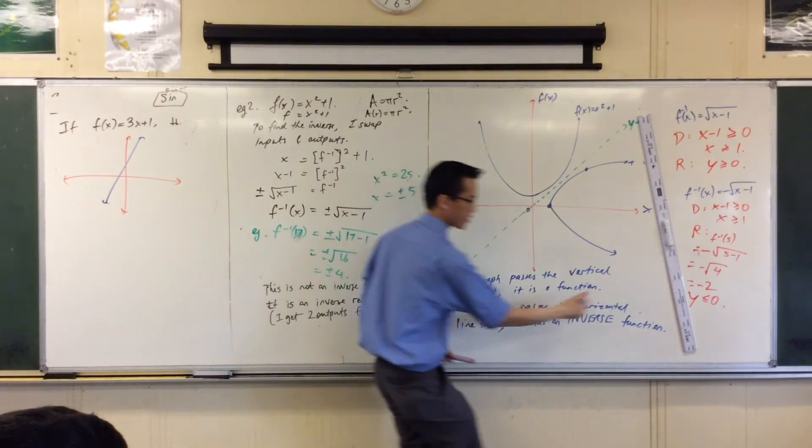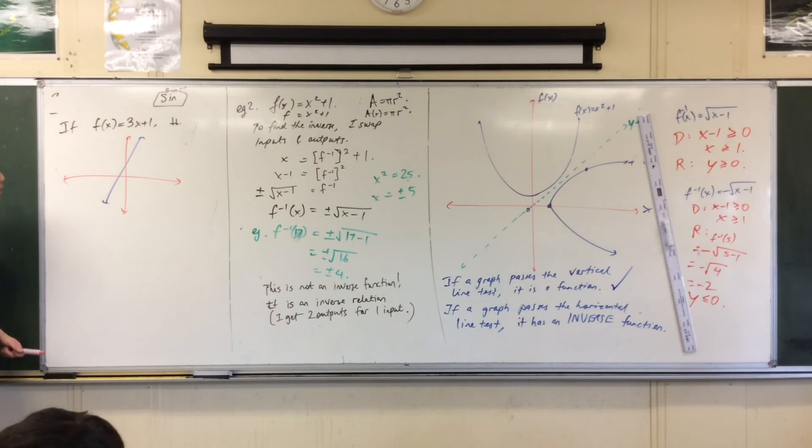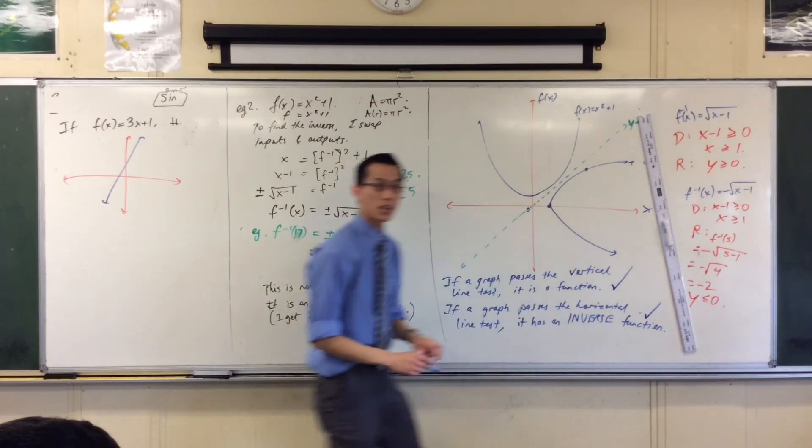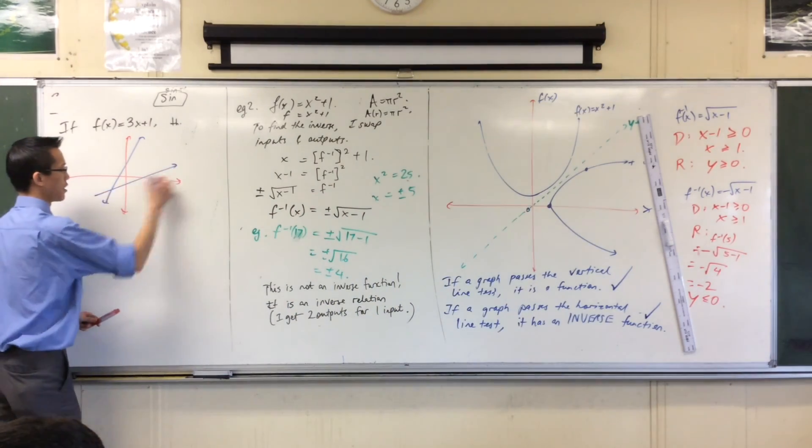But not only can I put a vertical line through it, I can also put in any horizontal line I like. Therefore, it also does this. It has an inverse function. It's going to be fine. And that's why we worked it out, and you get this equation.